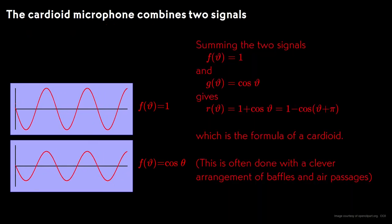If we take the sum of the two signals, we get the formula of a cardioid. Some cardioid mics do this electronically, and even provide omnidirectional and bidirectional outputs as well as the cardioid output. Others take the cosine and the sum, with a clever arrangement of baffles and air passages inside the mic.